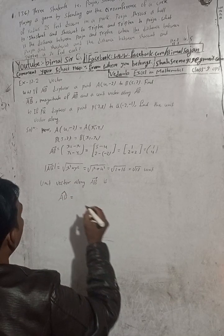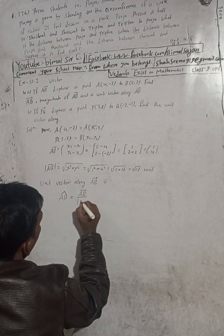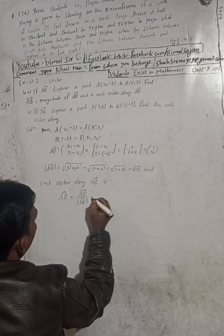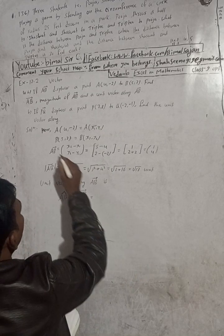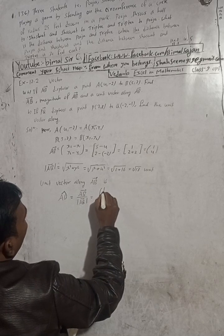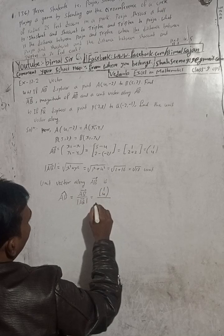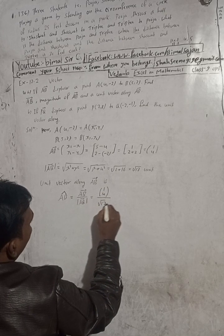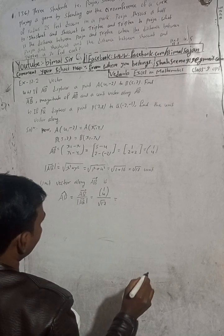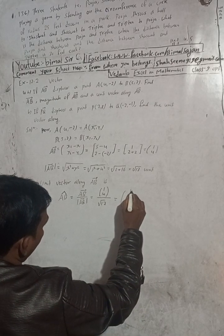The unit vector along AB vector — the formula is AB vector divided by the modulus of AB vector. So AB vector is (1, 4) and the modulus of AB vector is root 17. Therefore the unit vector is (1, 4) divided by root 17.